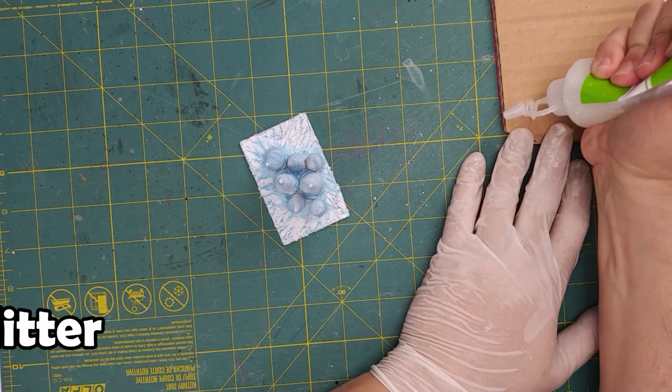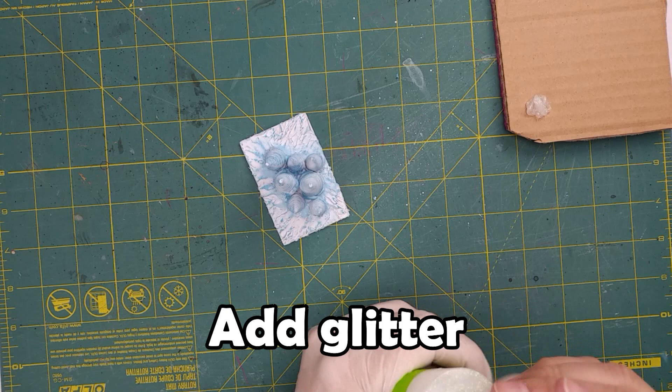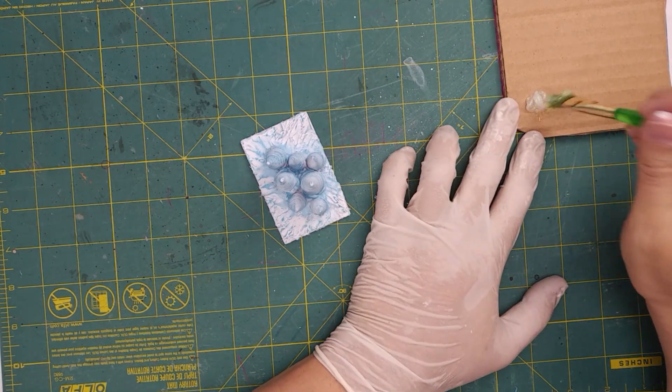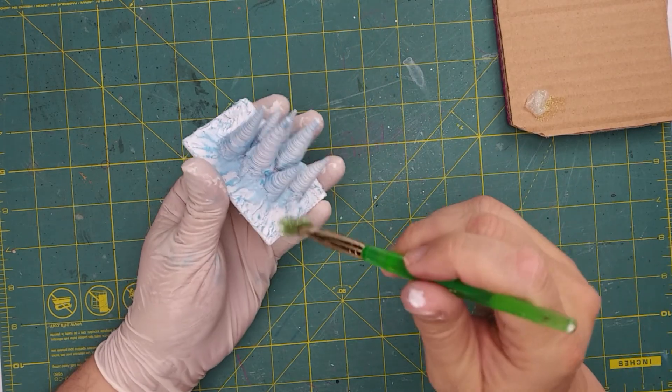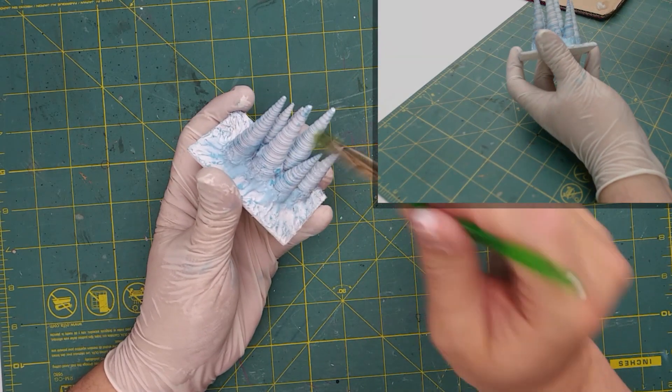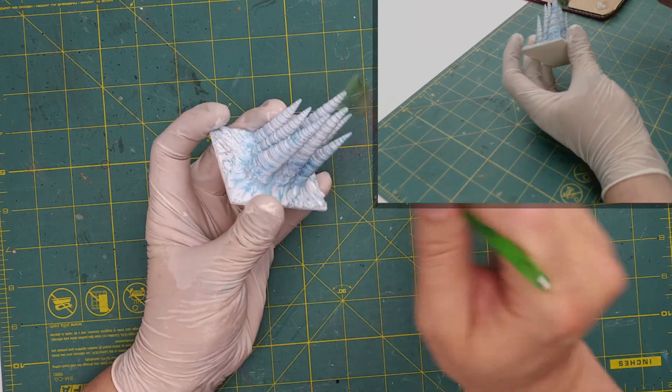Now I want to add some glitter. After the paint is dry, we want to get some glitter glue, any brand will do. This is what will give that build that icy appearance.